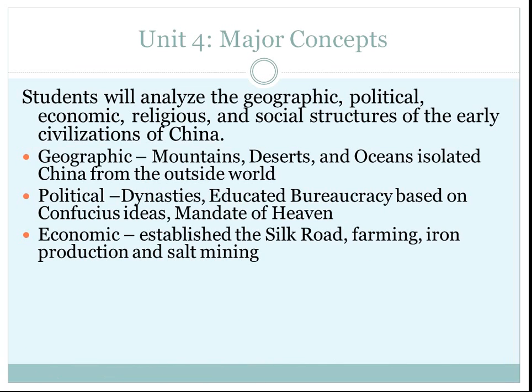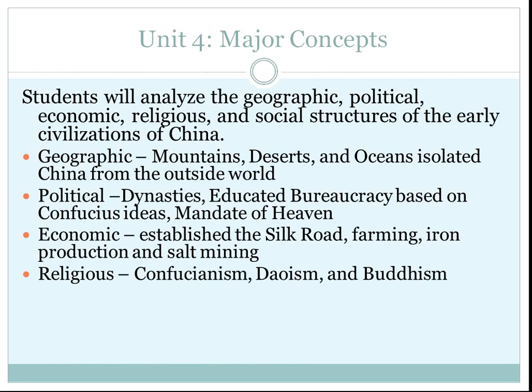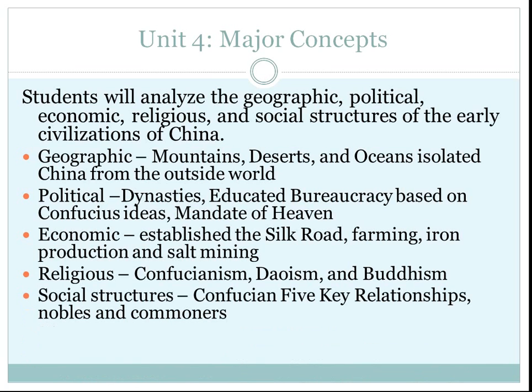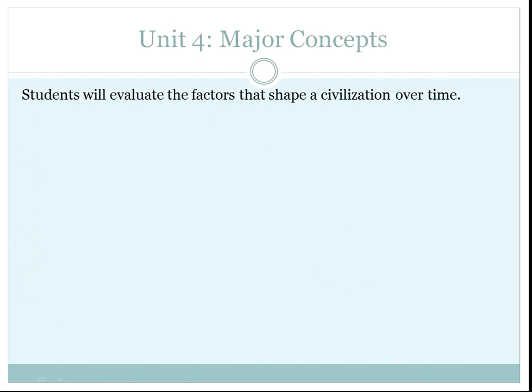In the economic realm, they established the Silk Road. It was based on farming, iron production, and salt mining. In the religious realm, you had Confucianism, Taoism, and Buddhism — three ways. In social structure, you had Confucius' five relationships, nobles, and commoners. The final note card is: students will evaluate the factors that shaped civilization over time.